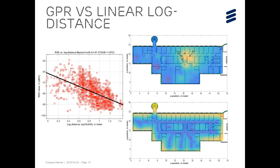On the left side of this slide, we have the traditional log distance linear model for beacon number 4. On the right side, we plotted the posterior mean and variance for the Gaussian process regression model, where the yellow color indicating higher RSS values and the blue color indicating lower RSS values.